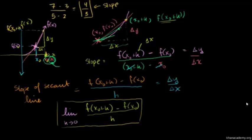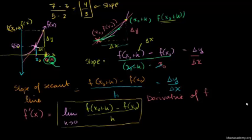This limit equals the slope of the tangent line, and I'm going to call this the derivative of f — written as f'(x). This is going to be another function, because the slope changes at every x value. You give me an x value, I apply this formula, and I can tell you the slope at that point. In the next video, I'll actually do an example of calculating the slope, which will make everything more concrete.